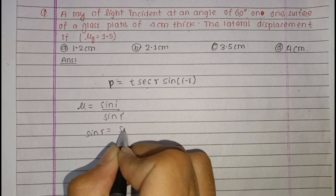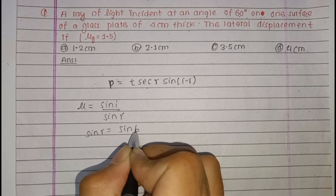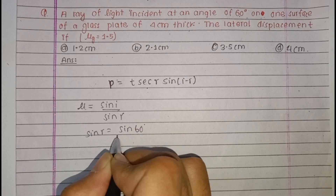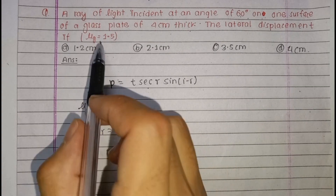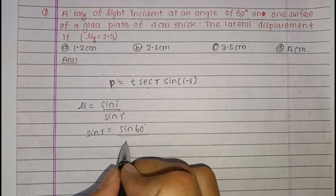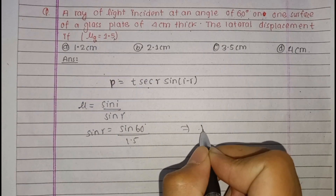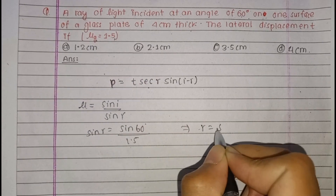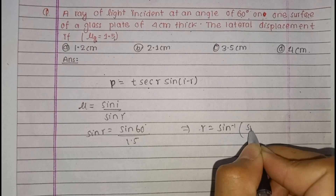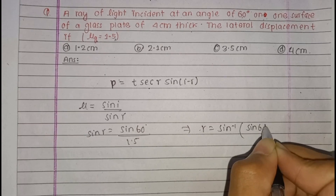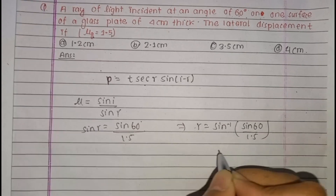Using sin 60 degrees upon mu equal to 1.5, R equals sin inverse of sin 60 divided by 1.5, giving the refracted angle R.